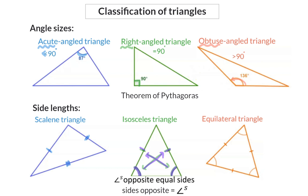The reason for equal sides opposite equal angles is sides opposite equal angles. And finally, we have triangles where all three sides are equal in length — then we know that all three angles are also equal, and they have to be 60 degrees each. For this statement, we'll use the reason equilateral triangle.